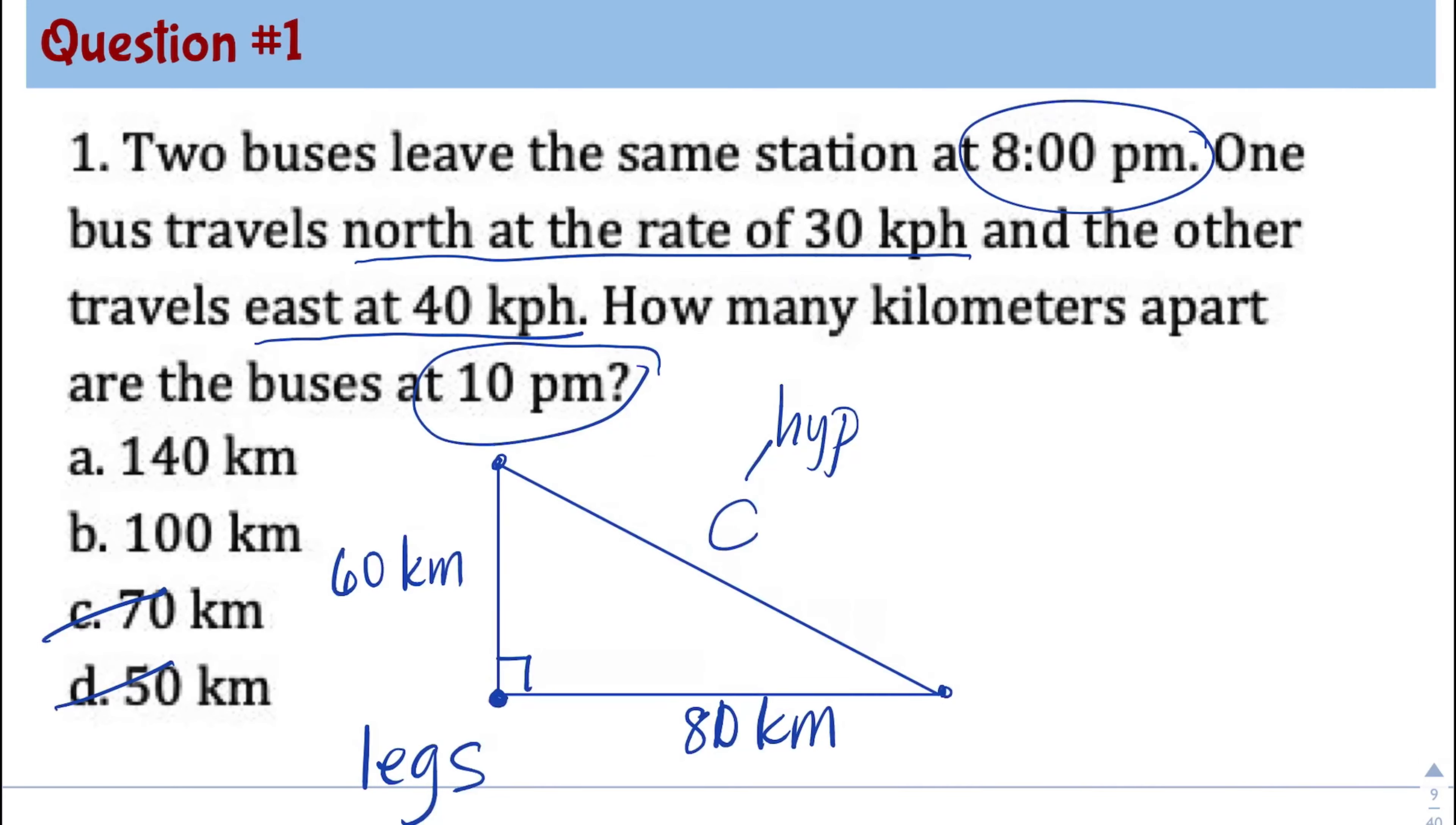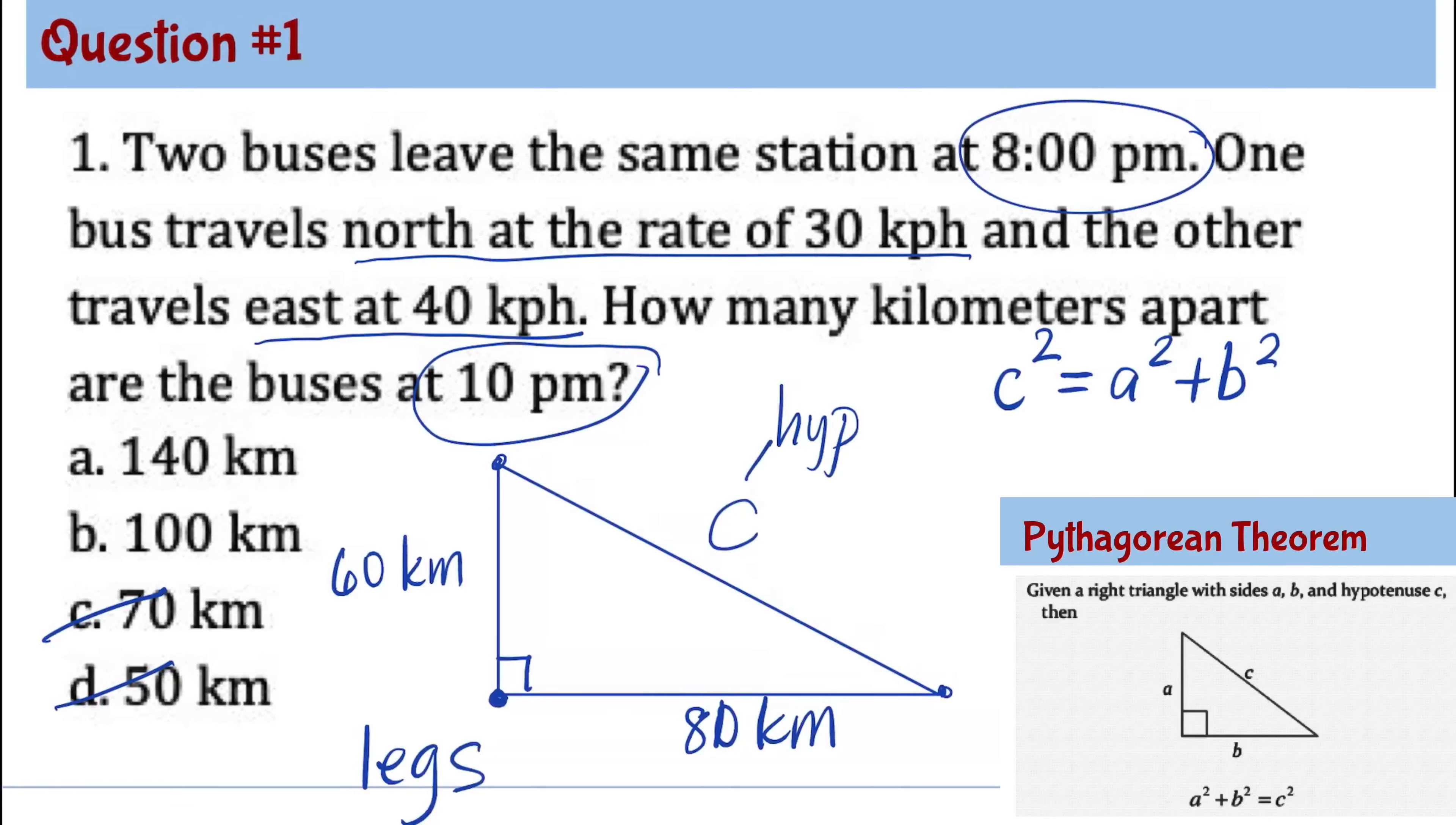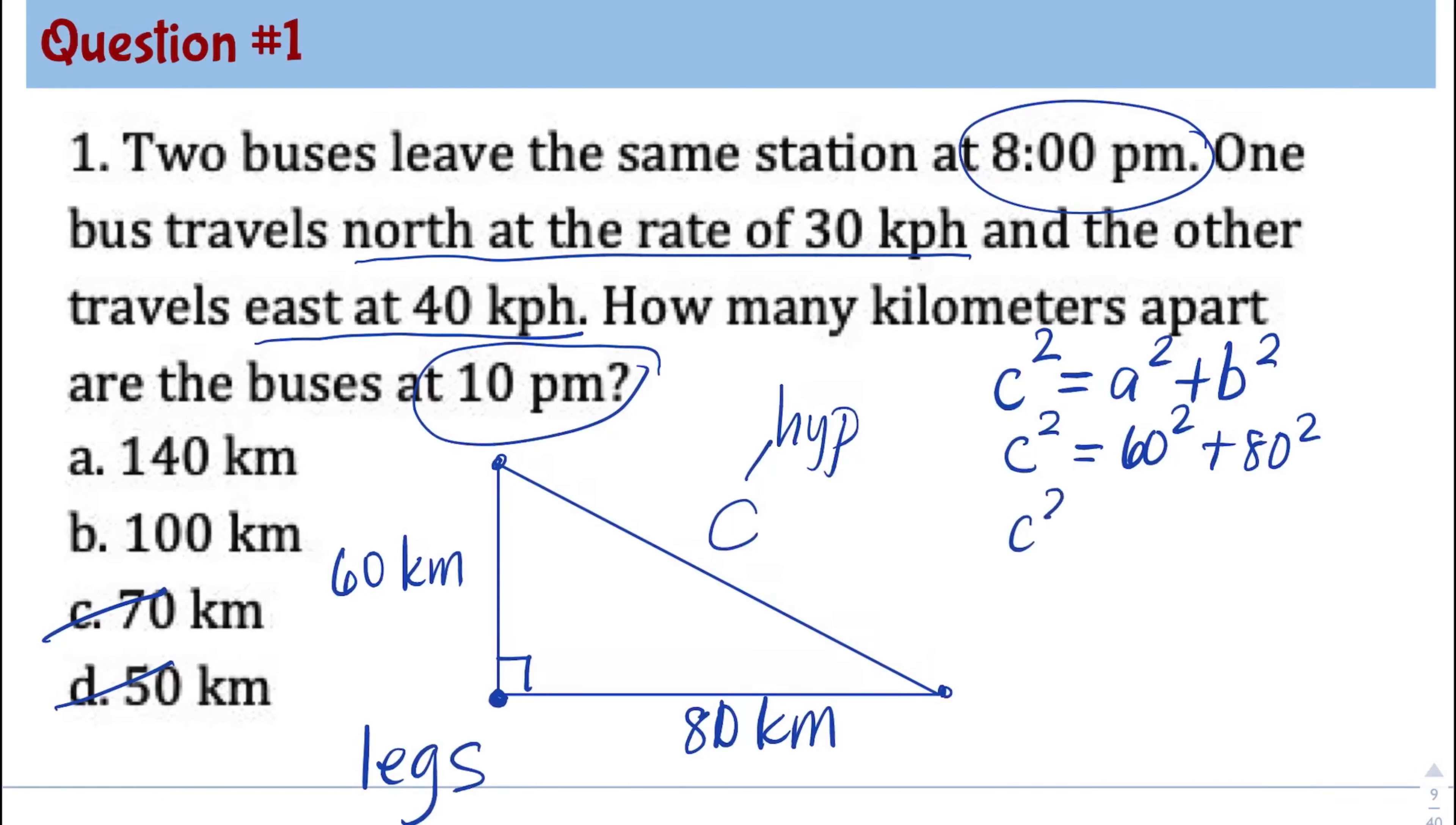To solve for the missing sides of a right triangle, we're using the Pythagorean theorem. Are you familiar with the formula? C squared is equal to A squared plus B squared, where C is the hypotenuse. So in this problem, the missing side is C, so we have C squared. A and B could be any one of the legs. So 60 squared plus 80 squared. And simplifying this, 6 squared is 36, and then we have two zeros. 8 squared is 64, and then we have two zeros. Adding together, we have 10,000.